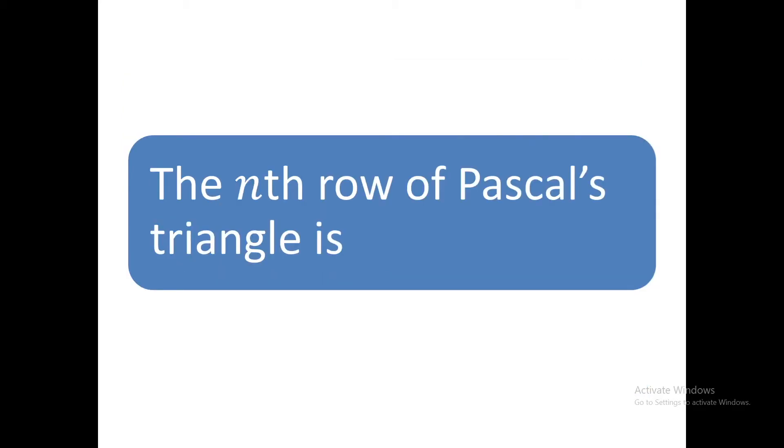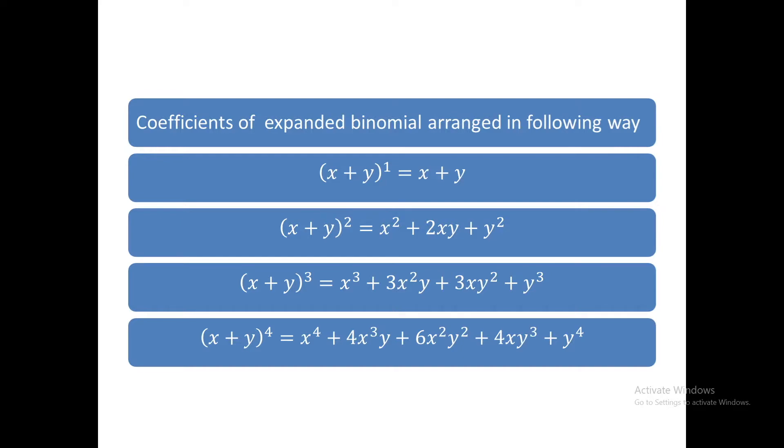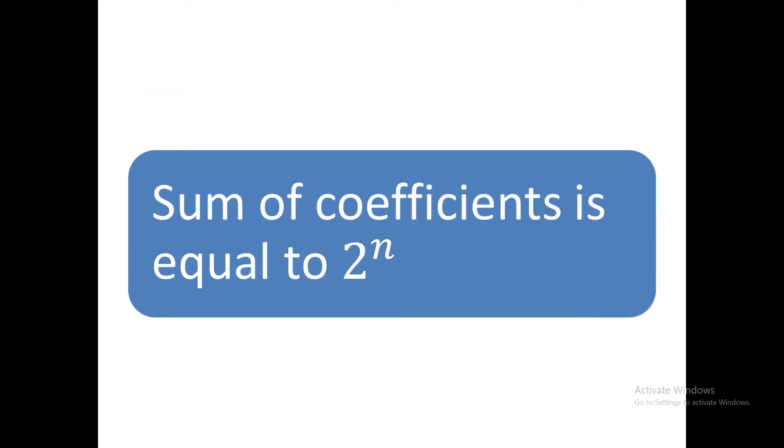The binomial coefficients are used to form the rows of Pascal triangle. Sum of coefficients is equal to 2^n. You can verify this pattern by taking x equals 1 and y equals 1 for any exponent.